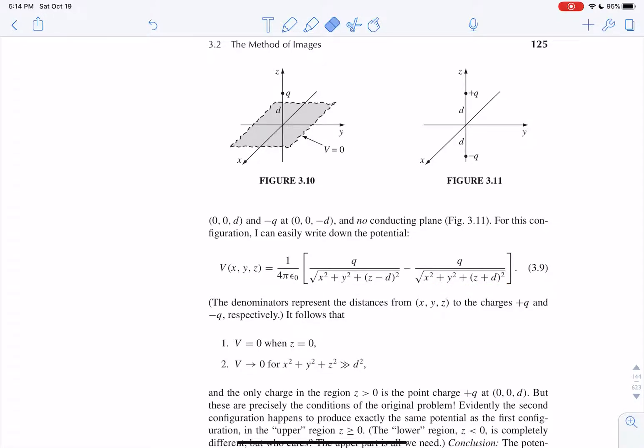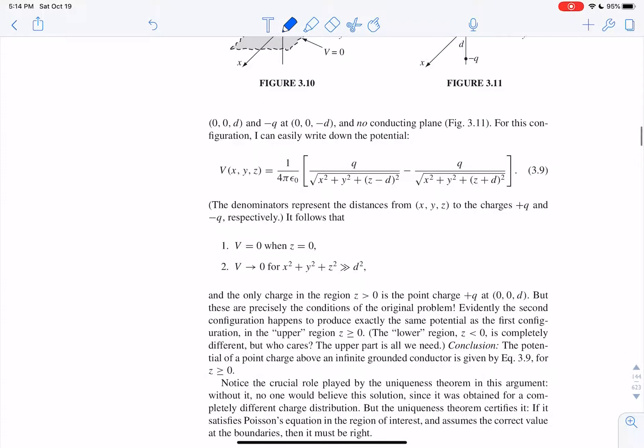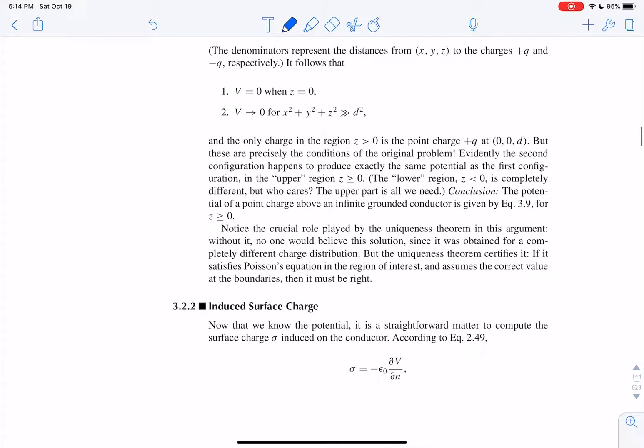And we can easily write the potential here because it's the principle of superposition, q over r, for both of these things. And the distance r here is x squared plus y squared plus z minus d squared. And that gives you your location for the potential. This has the same boundary conditions. v equals 0 and z equals 0 and v goes to 0 and whatever.